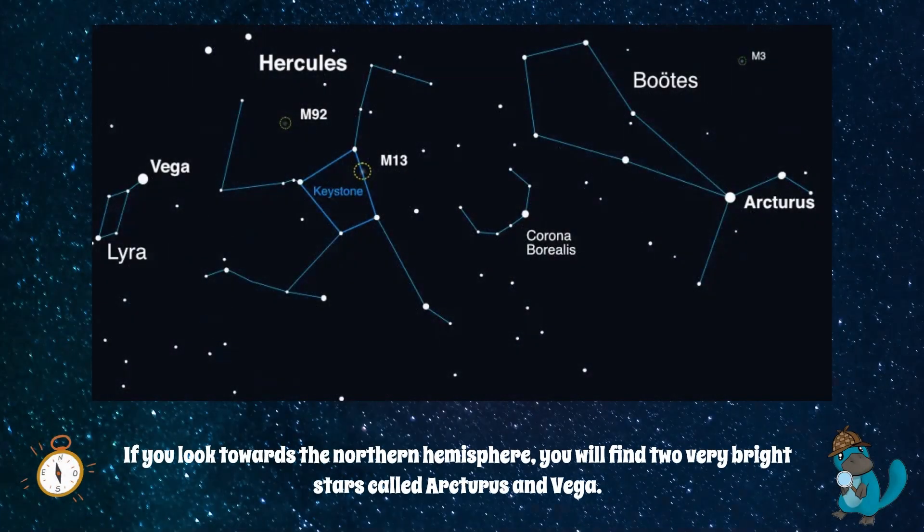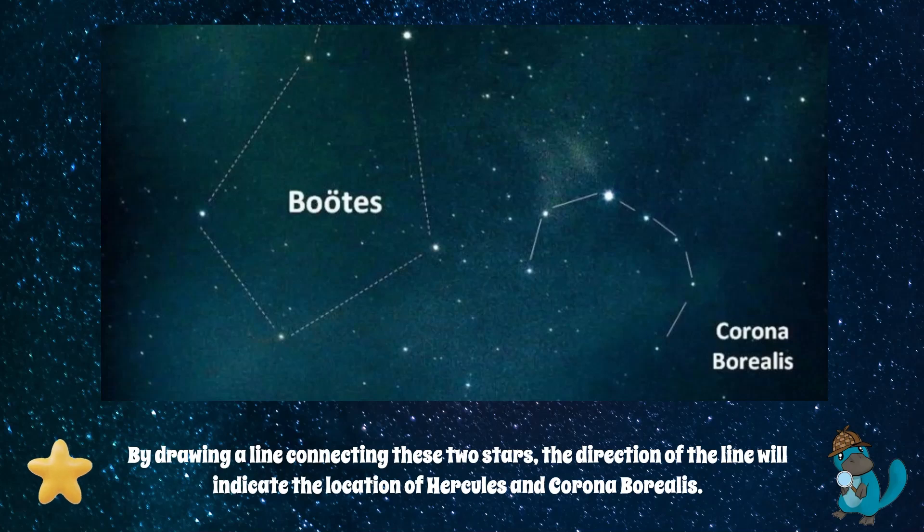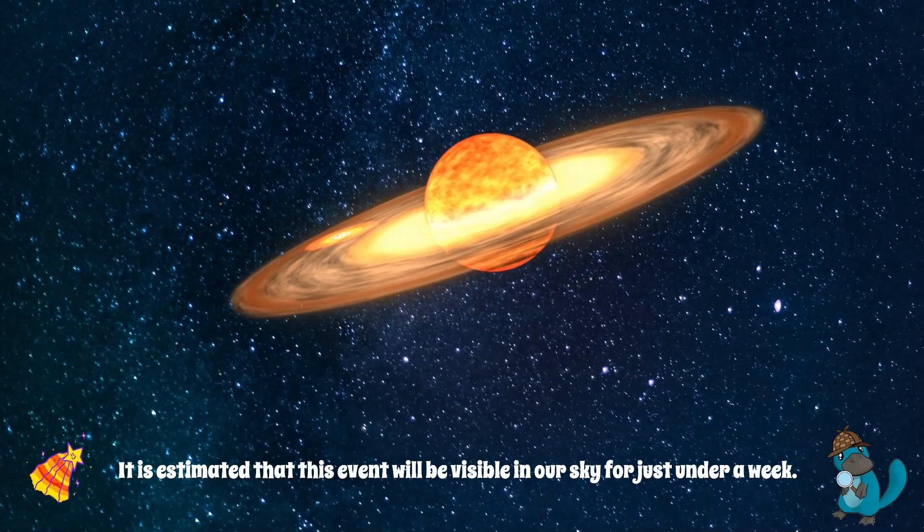If you look towards the northern hemisphere, you will find two very bright stars called Arcturus and Vega. By drawing a line connecting these two stars, the direction of the line will indicate the location of Hercules and Corona Borealis. It is estimated that this event will be visible in our sky for just under a week.